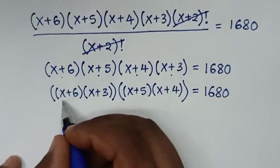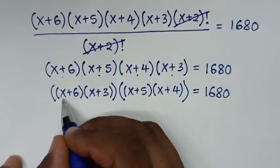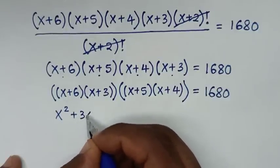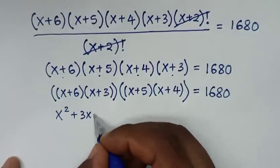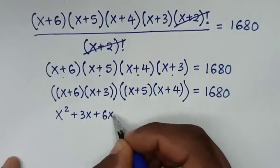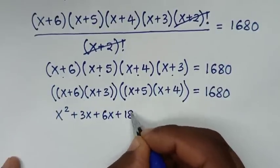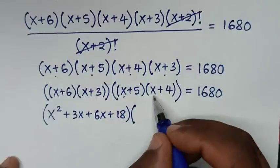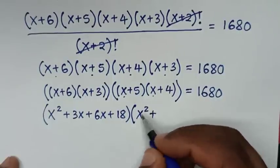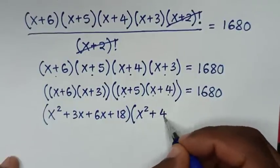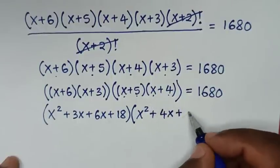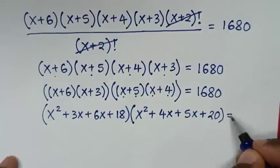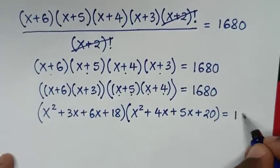In the next step we expand each pair. For (x+6)(x+3): x times x is x², x times 3 is 3x, 6 times x is 6x, and 6 times 3 is 18. Then we multiply (x+5)(x+4): x times x is x², x times 4 is 4x, 5 times x is 5x, and 5 times 4 is 20. This equals 1680.